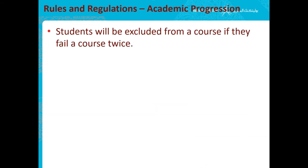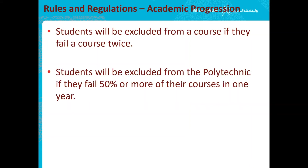For academic progression, students will be excluded from a course if they fail the same course twice. If a student fails 50% or more of their courses in one year, the student also gets excluded — I think this is called academic probation. Keep that in mind: if you fail a course twice, you're excluded.